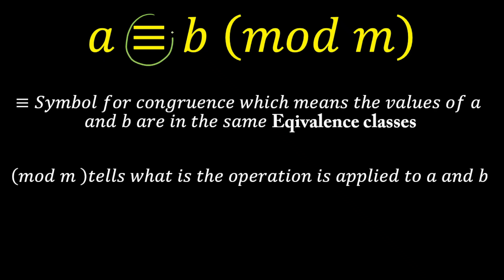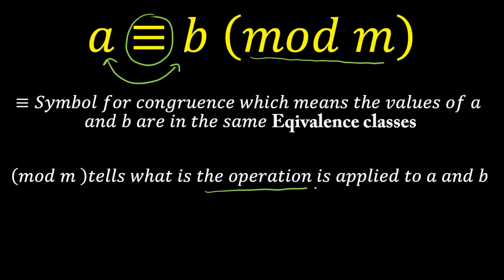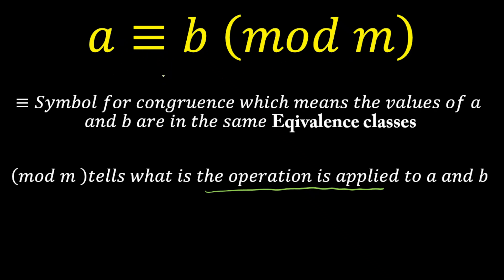This symbol represents congruence. That means A is congruent to B, and both A and B will be in the same equivalence class. Now, mod of M tells you the operation which is applied to both numbers A and B. This symbol means congruence — A and B are in the same equivalence classes. The meaning of this I will tell you in the next slide. And mod of M is the operation applied on A and B.